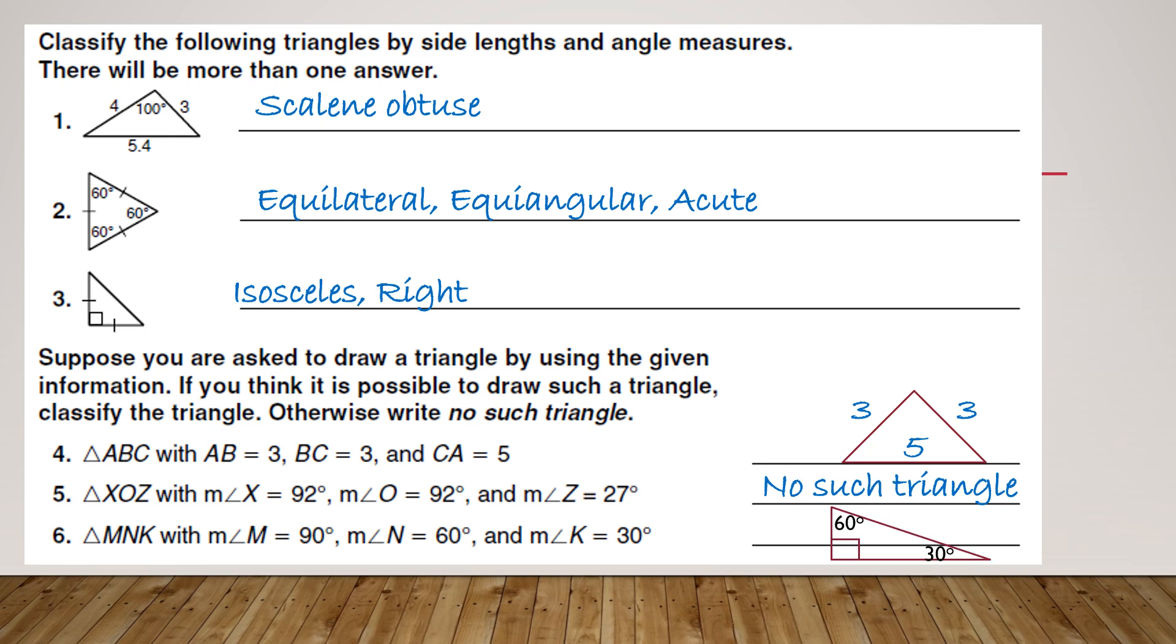For the last one, you see that we have a 90 degree angle, so we should automatically think that it is a right triangle, drawing it as such. And 90, 60, 30 is a super common one. But that's it for this video. Super short and sweet. Make sure you know this vocabulary. Have a great day.